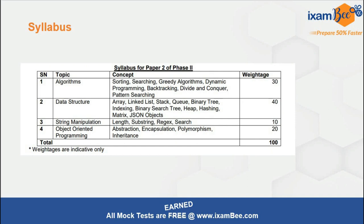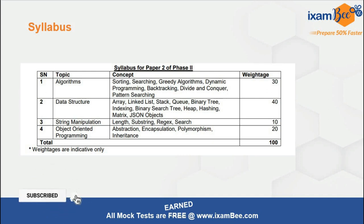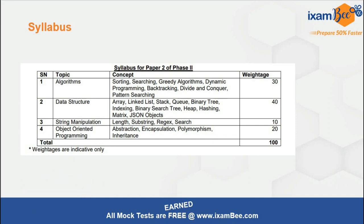Before going ahead, we should know what syllabus we have to cover for this paper. The syllabus has four topics: Algorithm, Data Structures, String Manipulation, and Object-Oriented Programming. I basically combine the string manipulations with the algorithm, that's why I'm saying three. Otherwise there are four topics and all four topics have some set of sub-concepts. You need to understand the concepts mentioned under these topics.